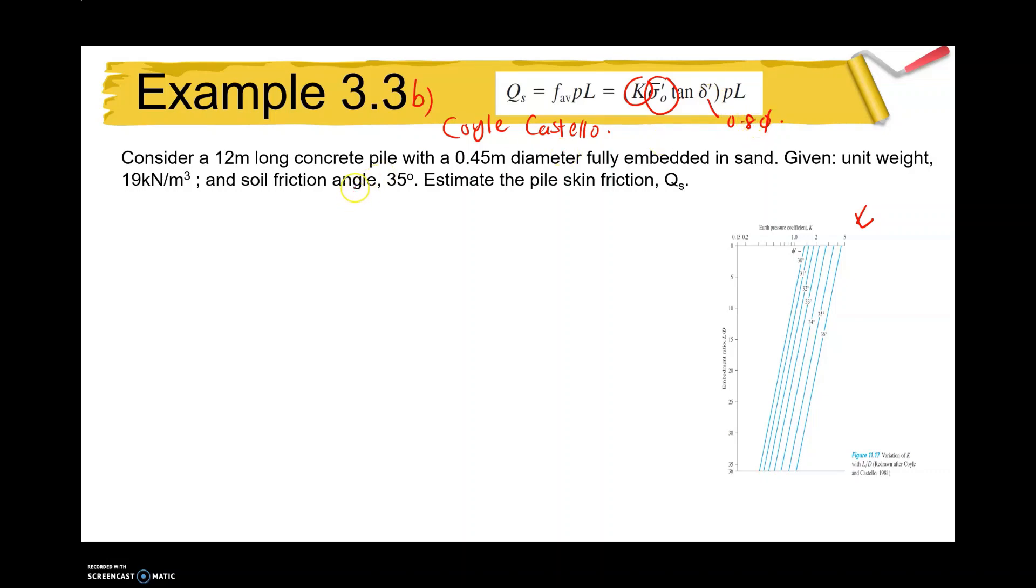The first step in this example is you need to determine the embedment ratio, so L over D which is 12 divided by 0.45 meters equals 26.7. Then the unknown is delta prime, delta prime equals 0.8 phi equals 0.8 times 35 degrees equals 28 degrees. And our perimeter equals pi D, which is pi times 0.45, and the perimeter equals 1.41 meter squared.